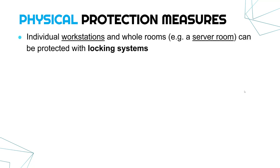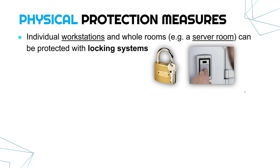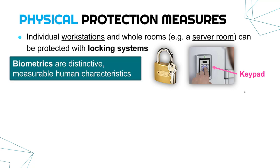The last physical measures I'm going to talk about are fairly obvious ones, but still worth writing about in exams. These are locks. Individual workstations and whole rooms, such as a server room, can be protected with locking systems. This can be a simple old-fashioned lock, maybe a padlock securing a laptop to a desk so it can't be easily stolen. Or it can be fancier systems like a keypad requiring a PIN to access your server room. If your server room contains all your data, it's important that room is locked off so nobody can just wander in.